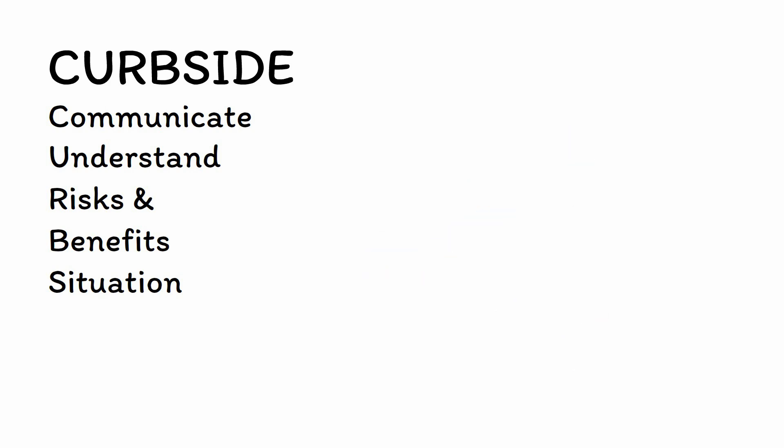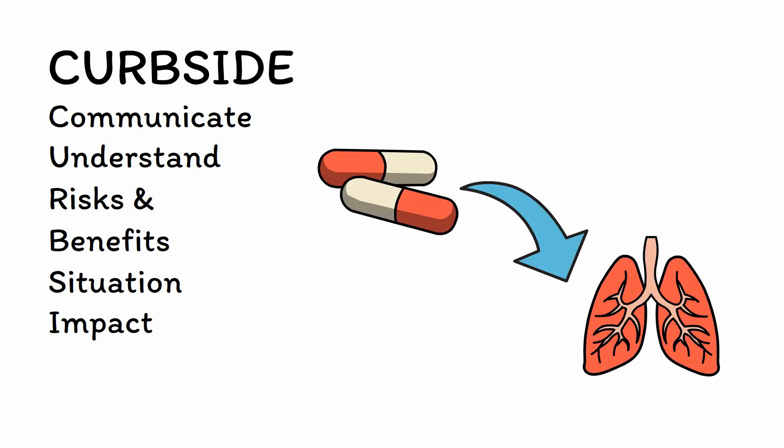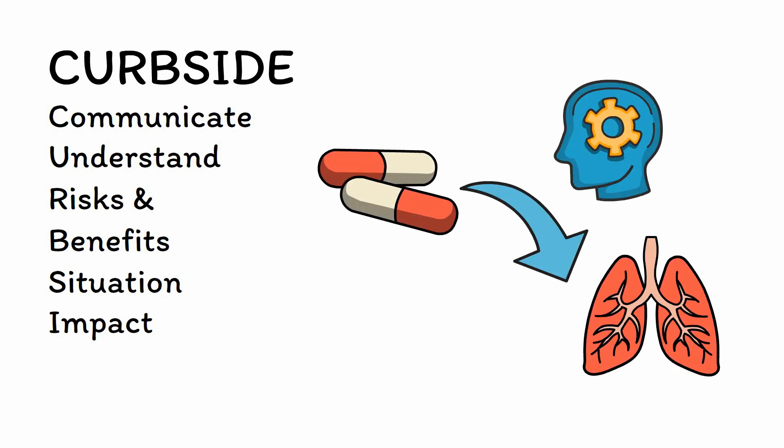If they can understand their situation, then they next need to be able to describe the likely impact that the various treatment options will have on their situation in a way that is logical and consistent with existing medical knowledge. For example, a treatment that increases the likelihood of survival from 0% to 100% is going to have a very different impact than one that increases it only from 0% to 10%, and patients should show an ability to grapple with information like this.